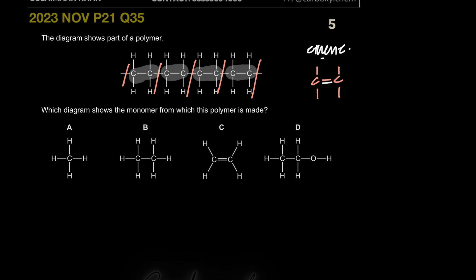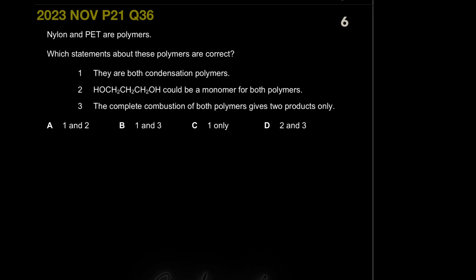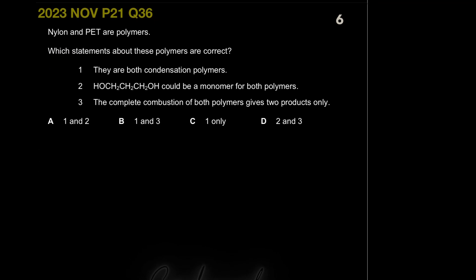The polymer is polyethene, so the monomer must be an unsaturated molecule. Options A, B, and D are automatically wrong — and D is particularly wrong because it includes an oxygen atom, which isn't present in this structure at all. C is the correct option.